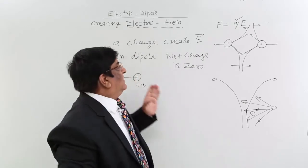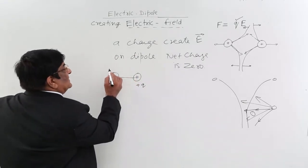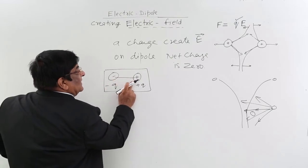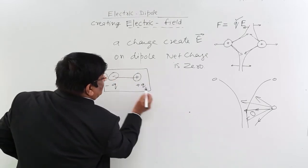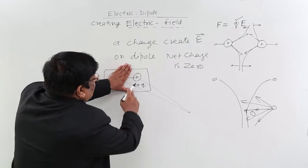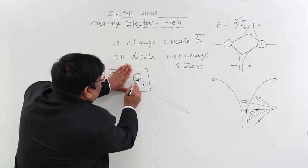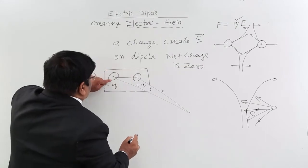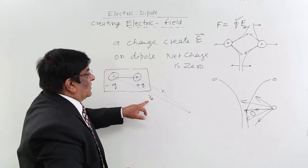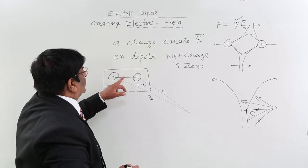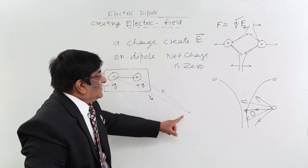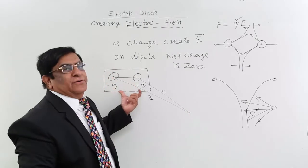Why can a dipole create an electric field when the net charge is zero? The answer is that the charges are located at different points, so with respect to any external point, the distances to the positive and negative charges are different. The positive charge creates a field Q over R1 squared, and the negative charge creates a field Q over R2 squared, and R1 and R2 are different. Therefore, the fields created by the two charges are different, and their resultant is the net electric field due to the dipole.